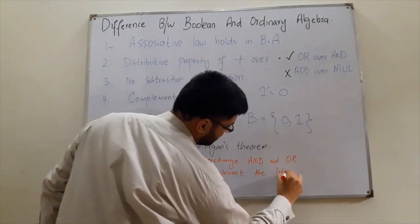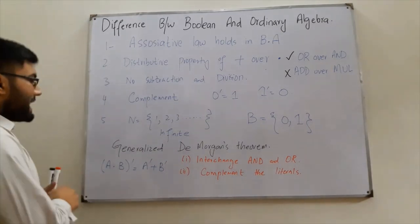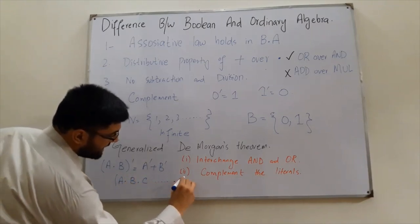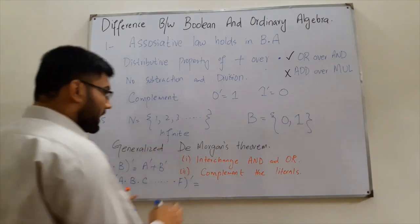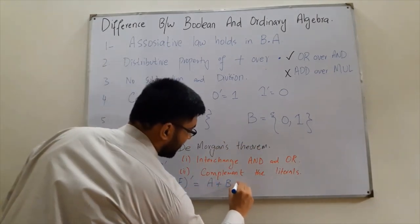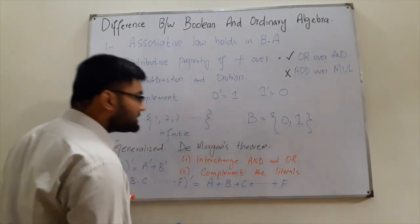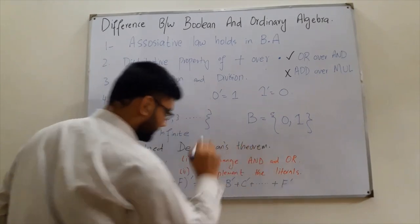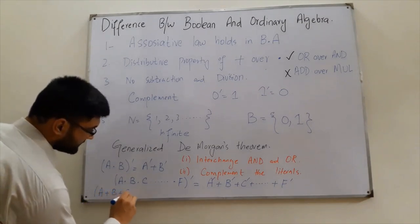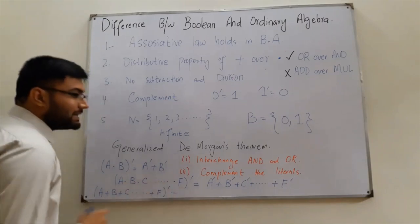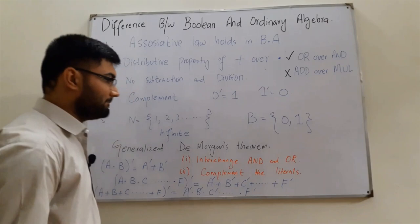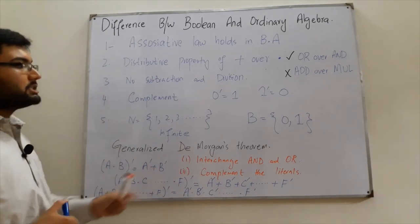For example, (A · B · C · ... · F)' equals A' + B' + C' + ... + F' — you interchange AND with OR and complement each literal. The second form is: (A + B + C + ... + F)' equals A' · B' · C' · ... · F'. That is the generalized De Morgan's theorem.